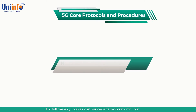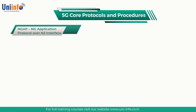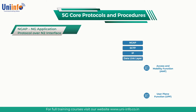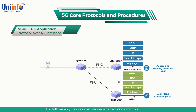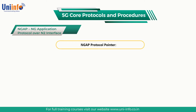Our next topic is NGAP — NG Application Protocol over the N2 Interface. In GnodeB split architecture, the NG interfaces connect the CU to the 5G core network. NGC connects the CU-CP to one or more AMF, whereas NGU connects the CU-UP to one or more UPF. NGC is also called N2 and NGU is called N3 as per reference point architecture. NGC uses NGAP protocol and NGU uses GTPU protocol.